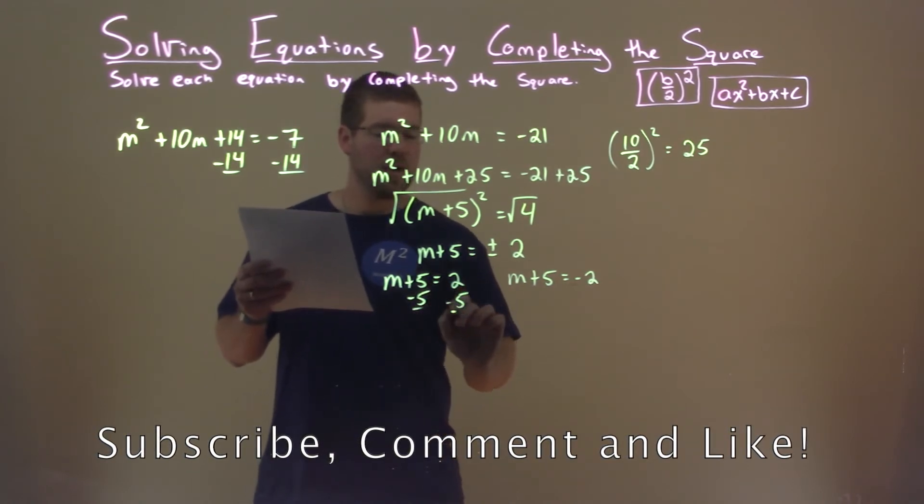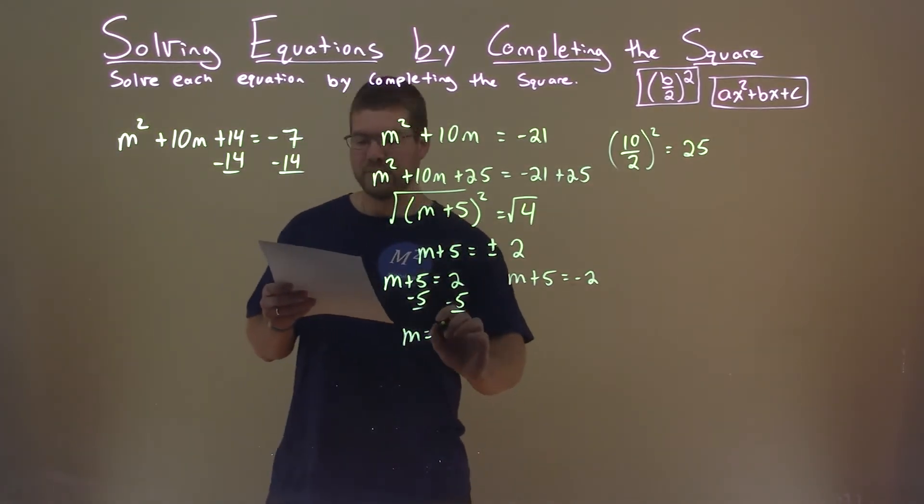Subtract 5 from both sides, and m equals 2 minus 5, which is negative 3.